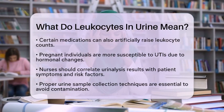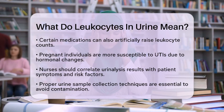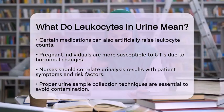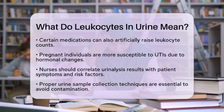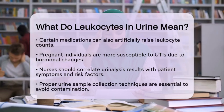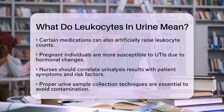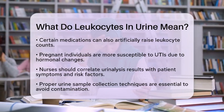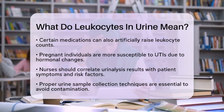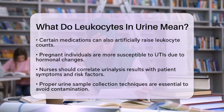Nurses play a significant role in interpreting urinalysis results alongside other findings, such as blood in urine or the presence of nitrites. For instance, if leukocytes are found with bacteria and nitrites, this strongly indicates a urinary tract infection. However, isolated pyuria may suggest sterile inflammation, such as interstitial cystitis.